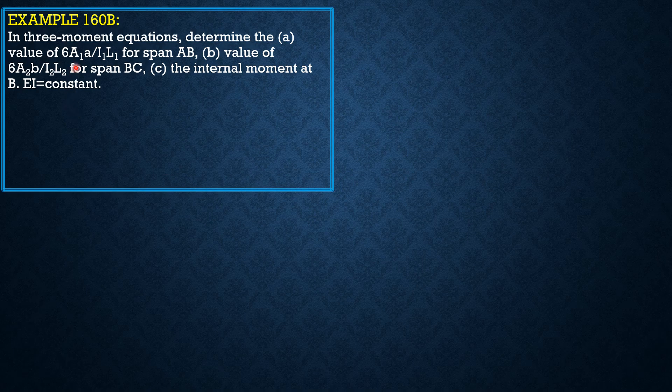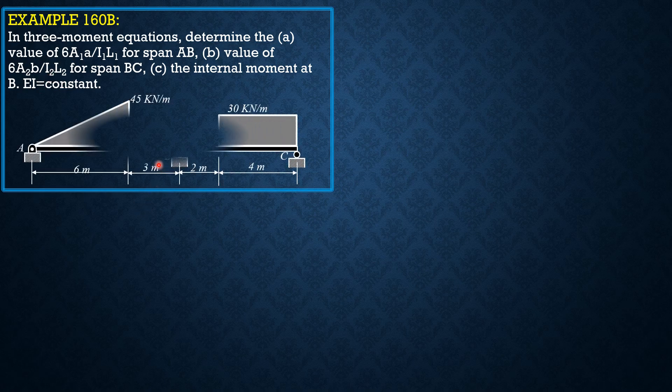Since EI is constant, we can reduce 6 area 1A over I1L1 to just 6 area 1A over L1 and 6 area 2B over L2. So, here is the given figure.